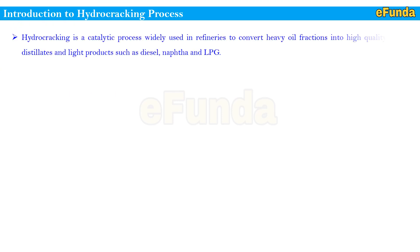Introduction to the hydrocracking process. Hydrocracking is a catalytic process widely used in refineries to convert heavy oil fractions into high-quality middle distillates and light products such as diesel, naphtha, and LPG.